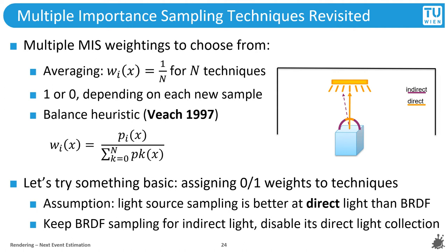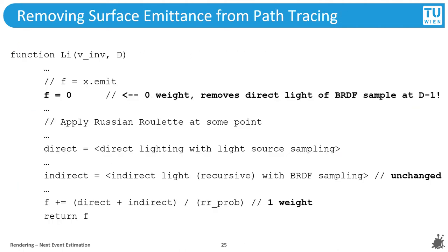We can assume that most of the noise we still see is coming from BRDF sampling because of its uninformed randomness. What if we can just disable the collection of direct light via BRDF sampling? Essentially, we could disallow BRDF sampling from ever finding any direct light and leave that job completely to light source sampling, which performs it so well. We can still keep BRDF sampling as a vehicle for moving the sampling locations for light source sampling around the scene, but we will deny it the detection of emittance on objects when it hits them. The emittance term is simply always set to zero.